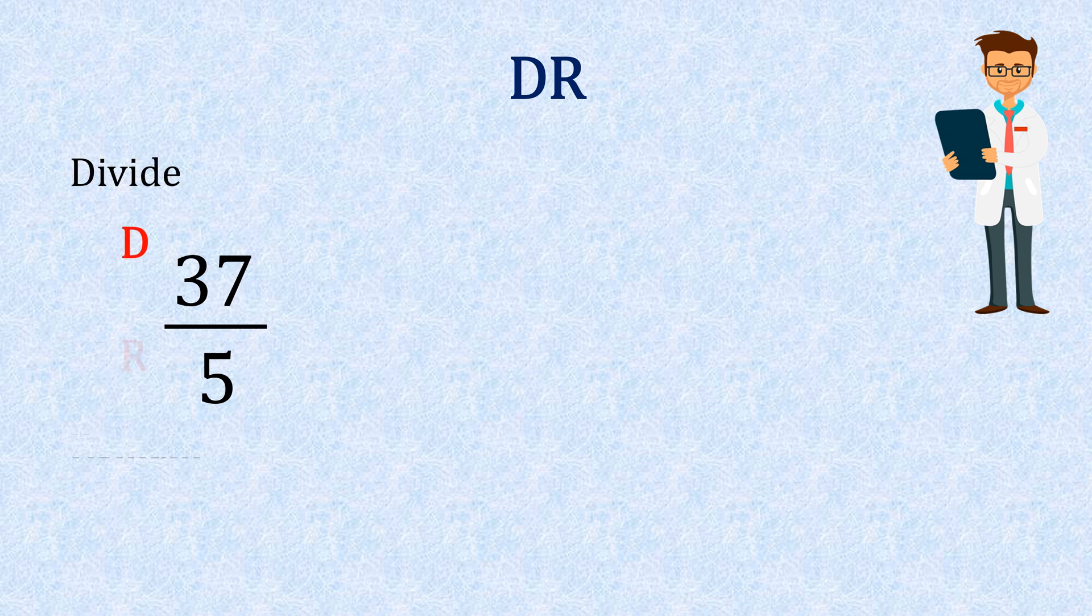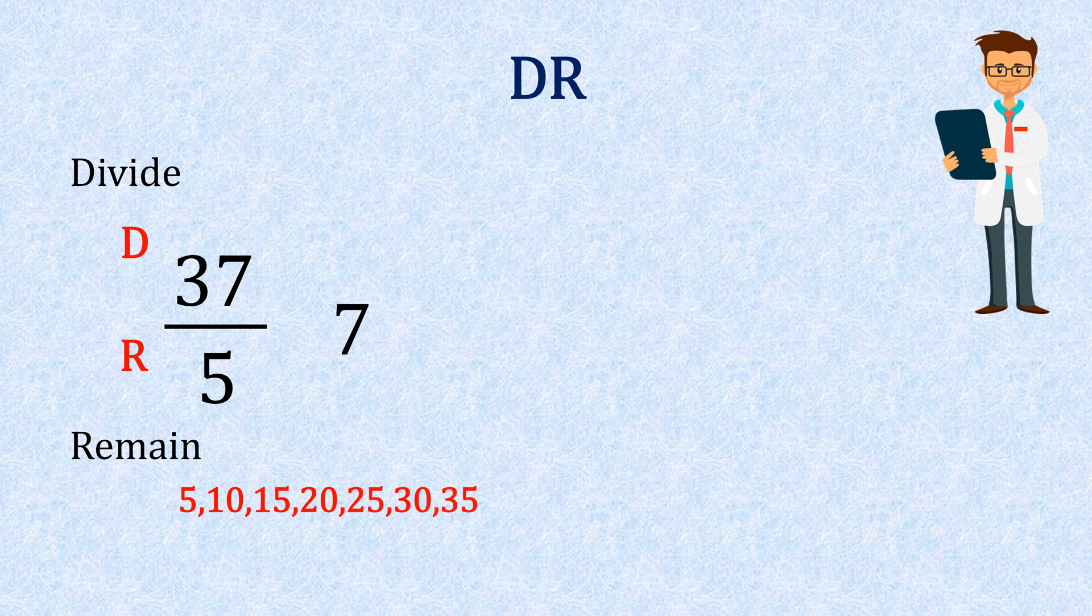So here's another improper fraction using our doctor formula. D for divide, R for remain. So 37 divided by five goes seven times. So seven is our whole number. And then we have leftover of two and the five at the bottom remains the same, giving us seven and two fifths.